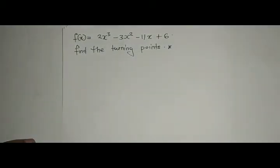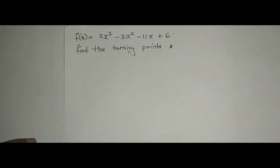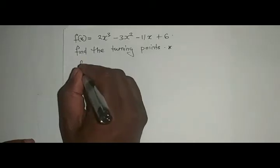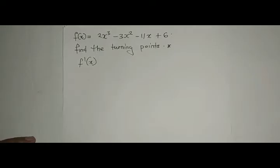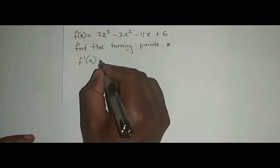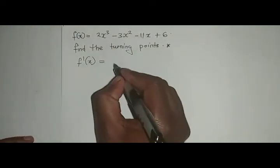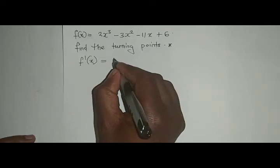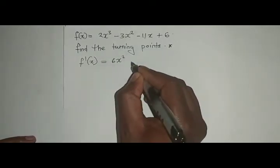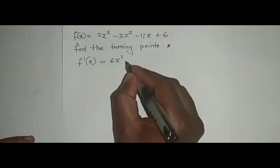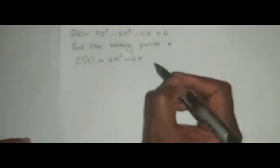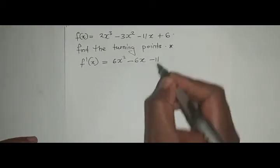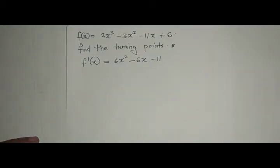For us to find the turning point, all we need to do is differentiate first. That is, you find f'(x), which means as you find f'(x) you are differentiating this one, which now becomes 6x² - 6x - 11. You differentiate 6, it's zero.